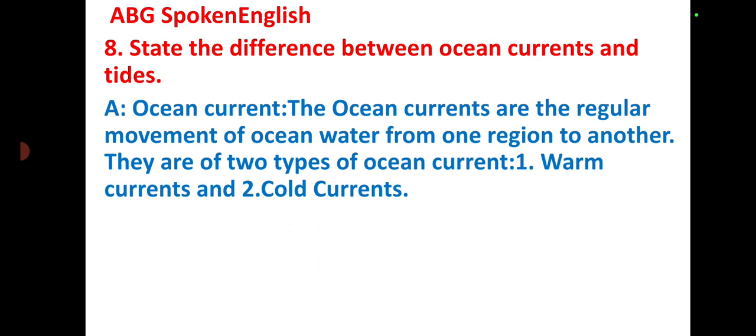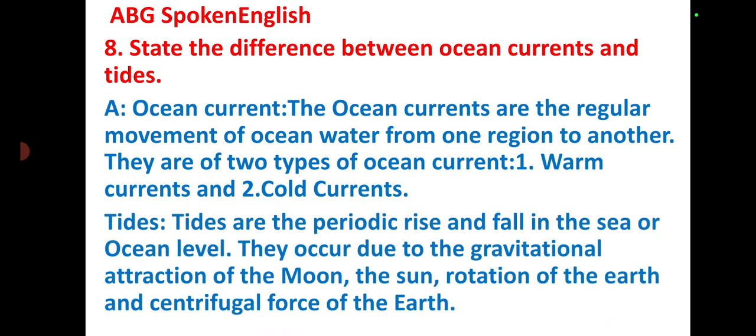State the difference between ocean currents and tides. Ocean currents are the regular movements of ocean water from one region to another. There are two types of ocean currents: warm currents and cold currents. Tides are the periodic rise and fall in the sea or ocean water level. They occur due to the gravitational attraction of the moon, the sun, the rotation of the earth, and the centrifugal force of the earth.